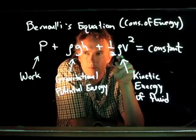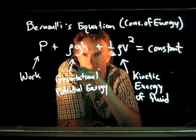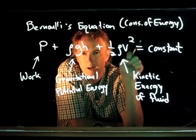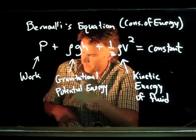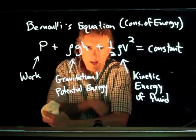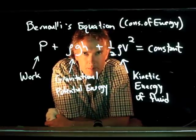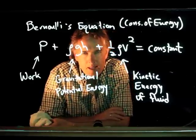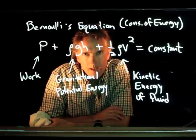So this equation is fantastic for analyzing the motion of fluids in pipes. Let's ask the following question: let's say we have a water tower, and it's open to the atmosphere on the top, and it's open through a spigot on the bottom. Let's calculate what the velocity of the water is leaving that spigot.